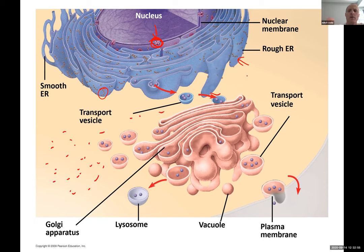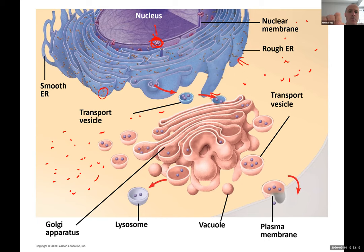Do free ribosomes have a different function than those attached to the endoplasmic reticulum? No — they have exactly the same function: to synthesize protein. Then we have the endoplasmic reticulum, which is a continuous membrane from the nucleus.